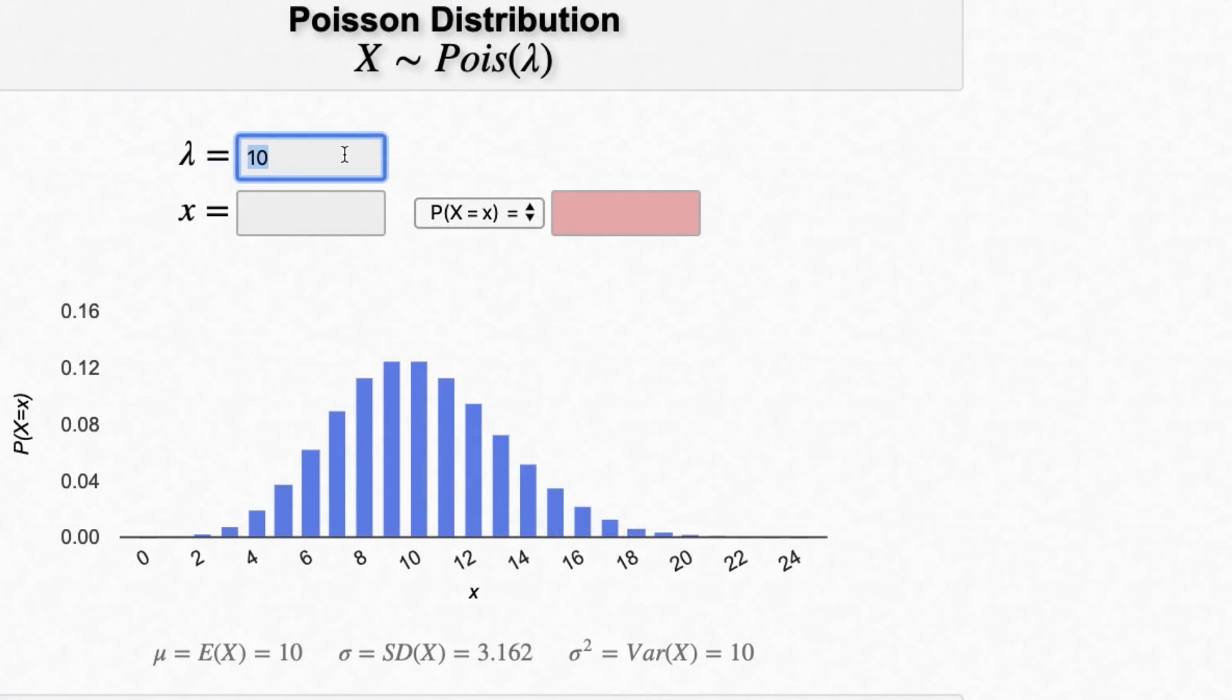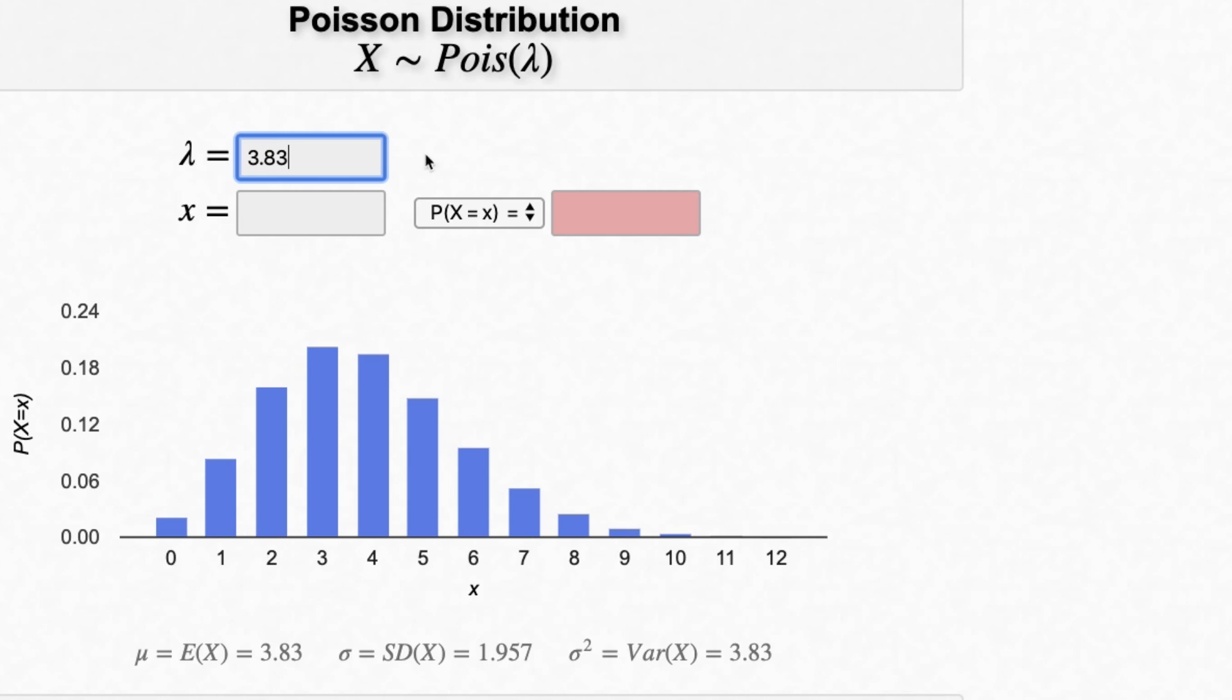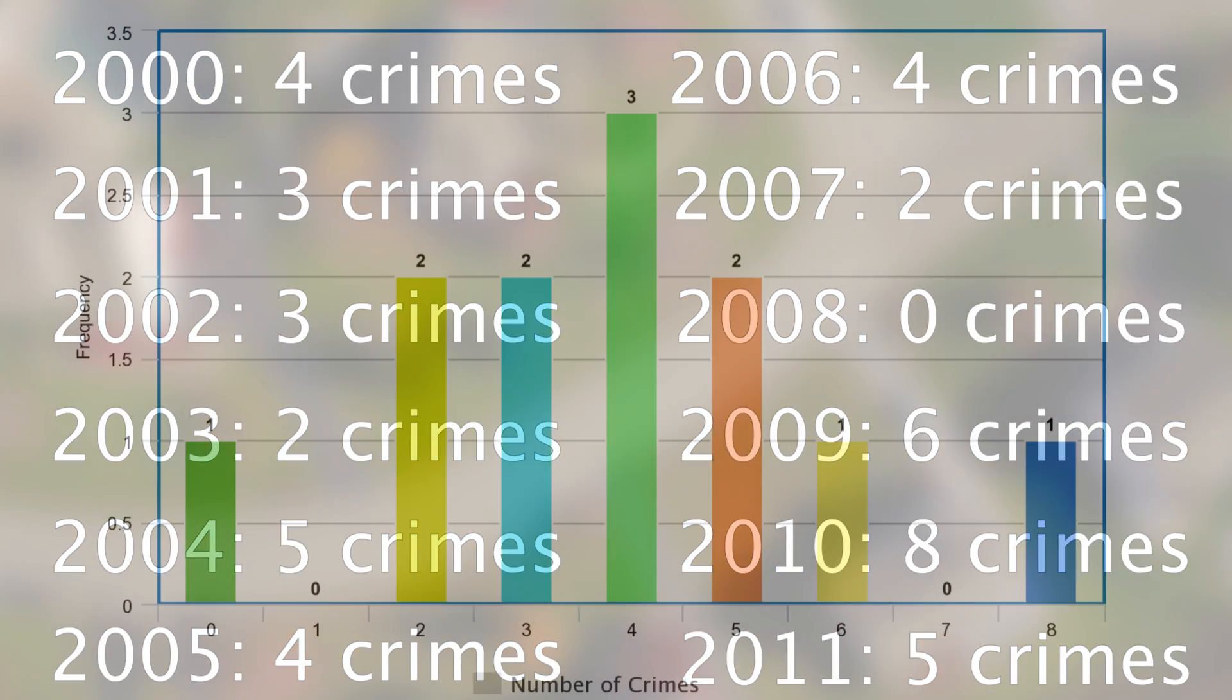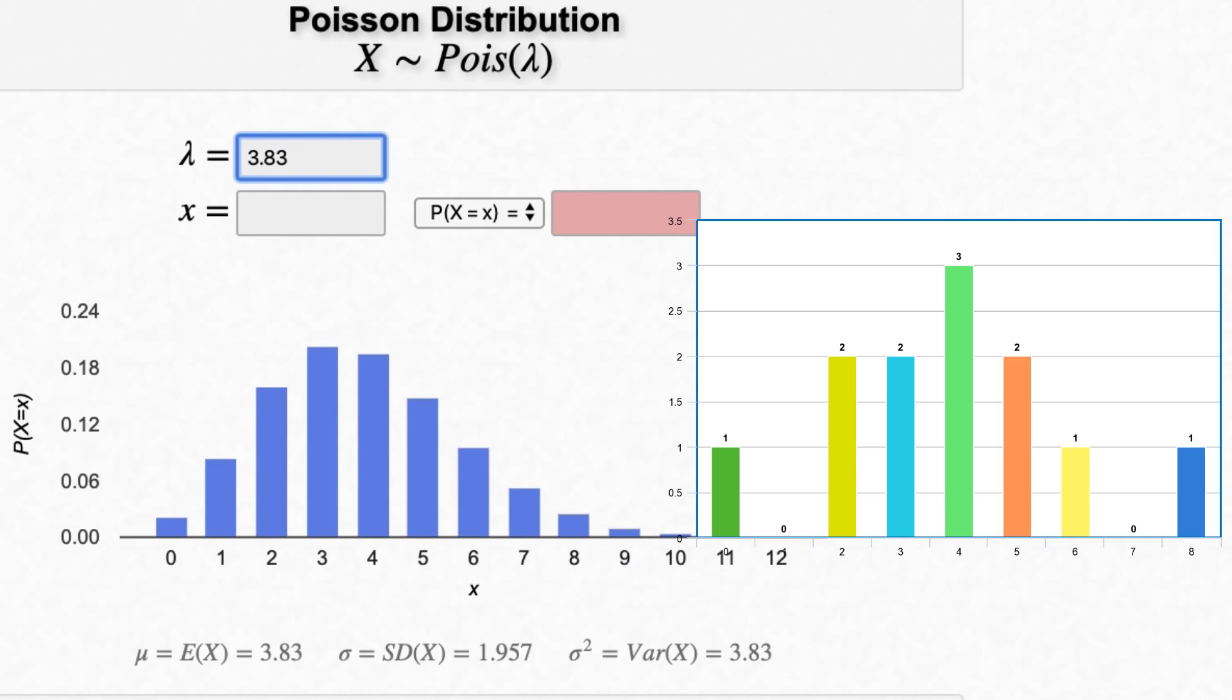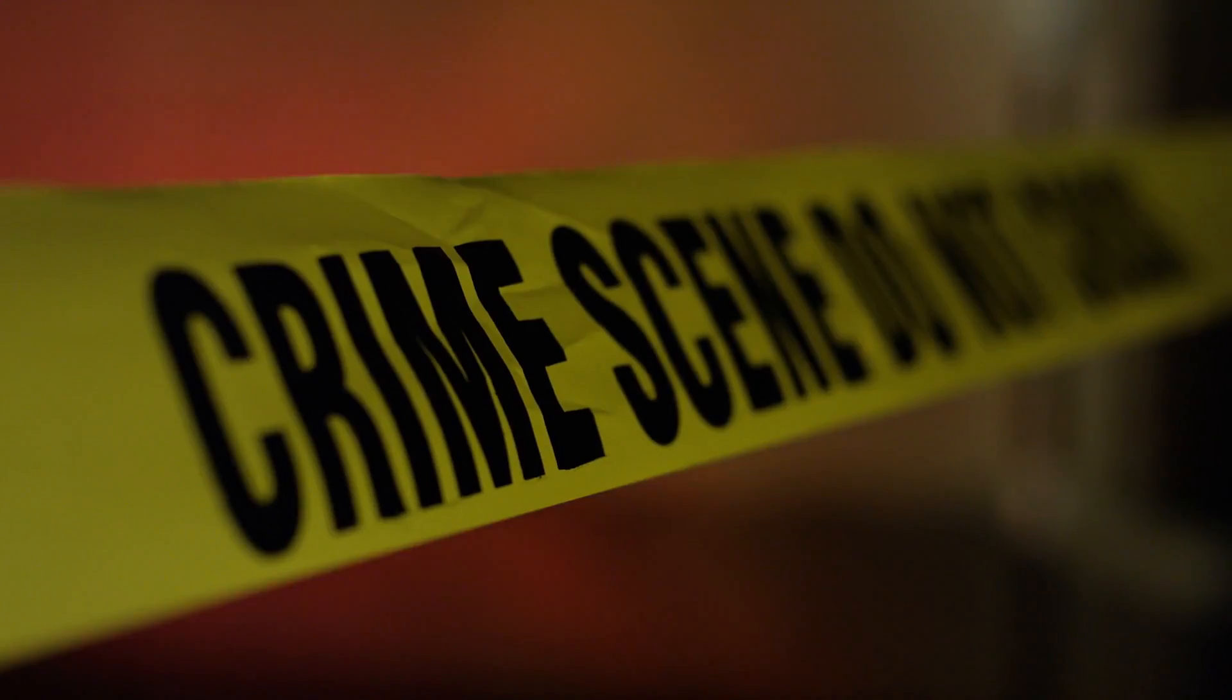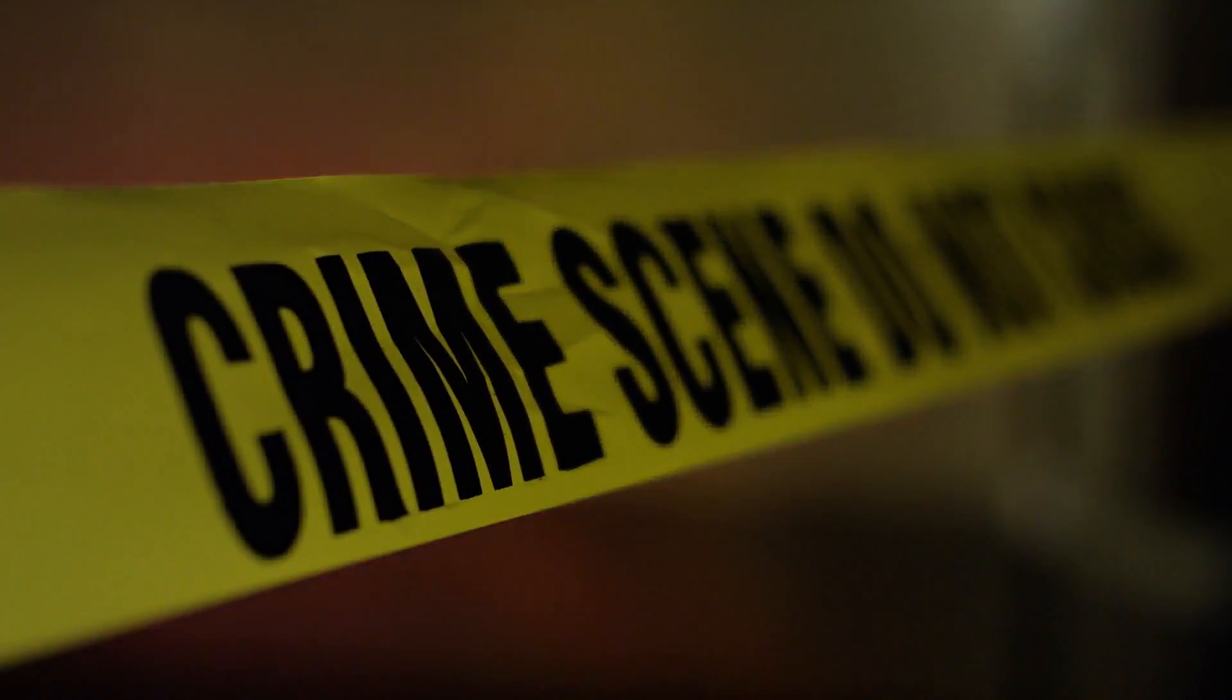So let's say on average about 3.83 people commit a crime every year in some hypothetical town. Then this would be the estimated probabilities that some number of crimes happen during any given year, assuming again everything is independent and random. Now let's take the numbers I put on the screen earlier, which by the way also had an average of 3.83, and make a bar graph of those. If we put these two graphs next to each other, we see that the more extreme values, as well as the most frequent number, pretty much matches what we would expect for a truly random process with that same average. It's not perfect, but there are consistencies showing that the increased crime we saw may not be caused by anything more than randomness.